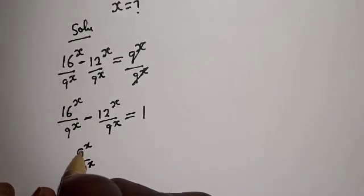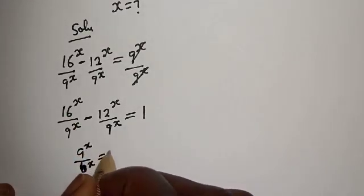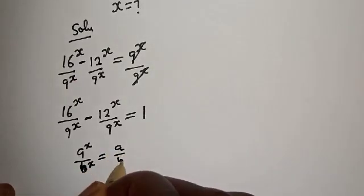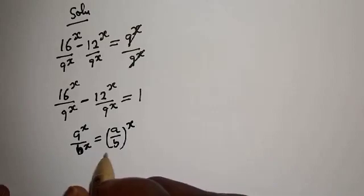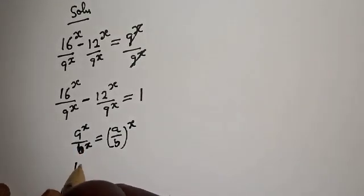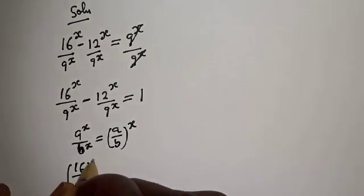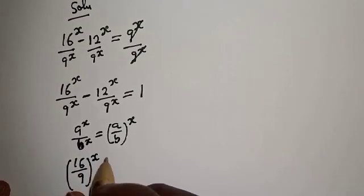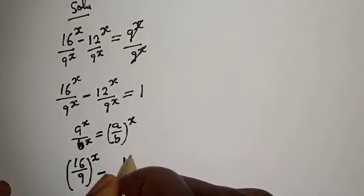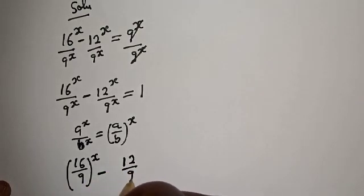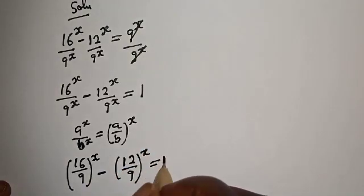Then, if you have a raised to power x over b raised to power x, this is equal to a over b all raised to power x. So this can be written as 16 over 9 raised to power x minus 12 over 9 raised to power x is equal to 1.